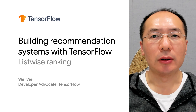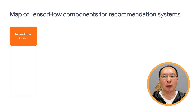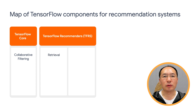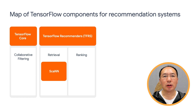In this video, we're going to continue our journey on building recommendation systems. In our previous videos, we discussed collaborative filtering, a very common approach to building recommendation systems. Then we introduced you to the elegant library TensorFlow Recommenders. We showed you how to build a retrieval and ranking system using TF Recommenders. We also leveraged ScaNN, an efficient library, for approximate neighborhood search to make the retrieval stage more efficient.